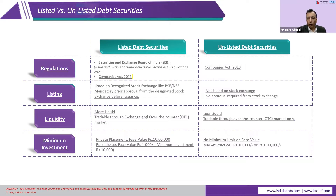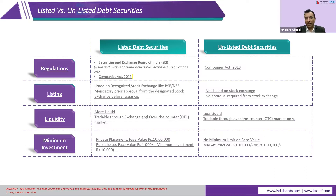Listed securities can trade over the exchange and in the OTC market, but unlisted securities can only trade through the OTC market. When the mode of issuance is private placement, the face value has to be 10 lakhs. For a public issue, the face value is 1,000 rupees, with a minimum investment requirement of 10,000 rupees — so you subscribe to a minimum of 10 units. For unlisted securities, there are no such guidelines; face value can be 10,000 or 1 lakh rupees depending on the issuer.